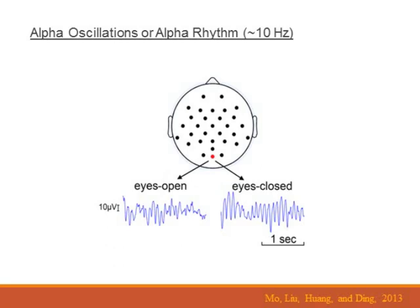Suppose we place an electrode on a person's head and then observe the voltage coming out of a posterior electrode. In this case, this red one. What we will see is that when the eyes are closed and the person's awake, the voltage exhibits fairly rhythmic activity.